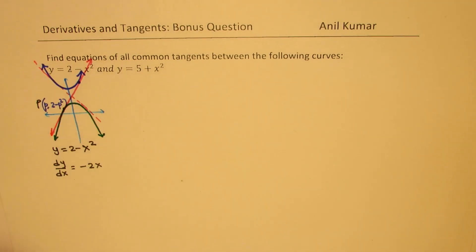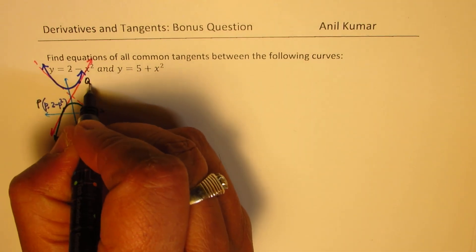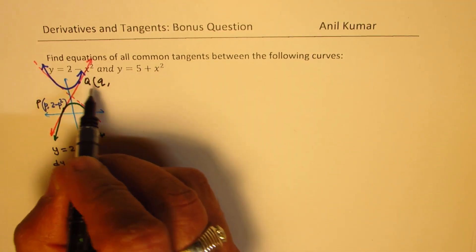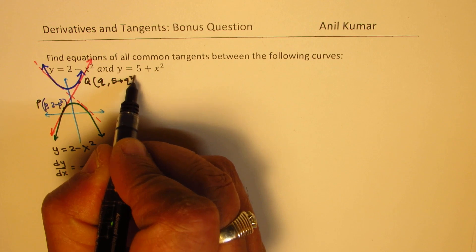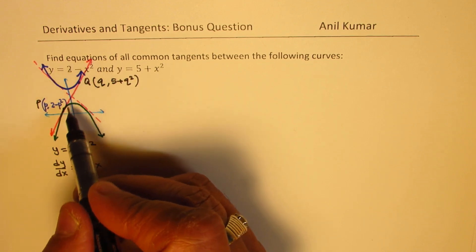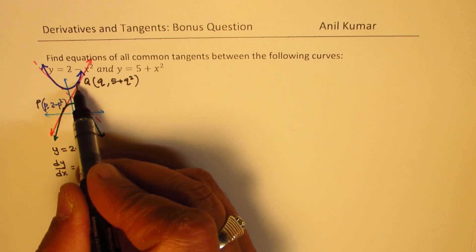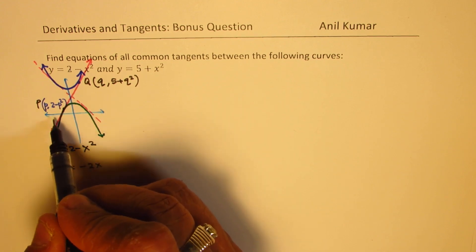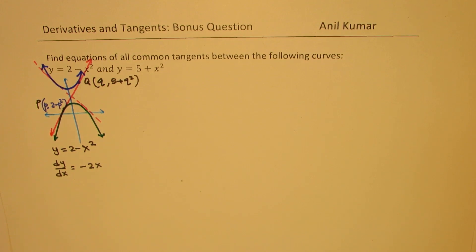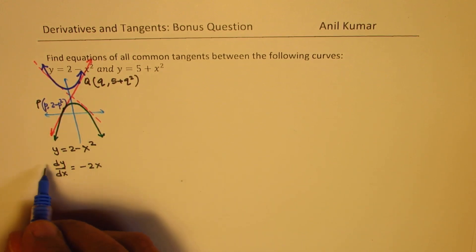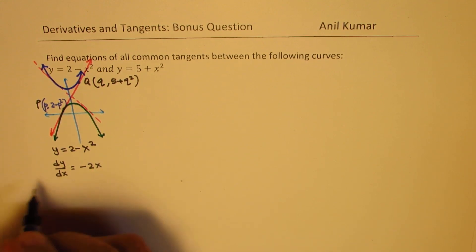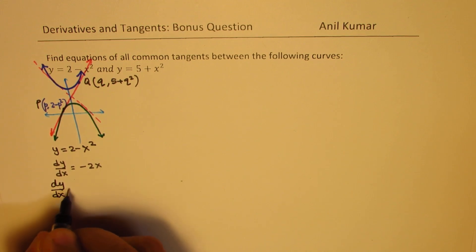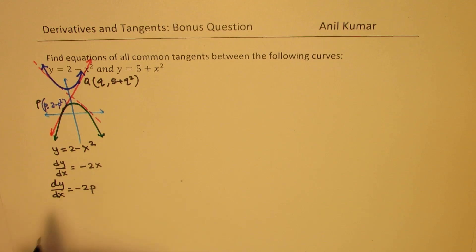Now consider a point Q on the other curve, with x coordinate lowercase q, so the y value will be 5 plus q squared. So let us say that this line is tangent at P and Q, where P has x value lowercase p and y value 2 minus p squared. The tangent at P has slope dy/dx equals minus 2p.